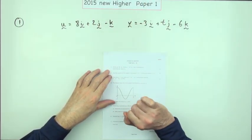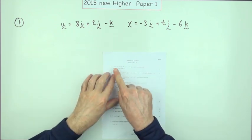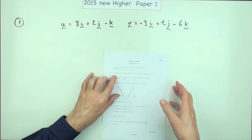Question one from the 2015 New Higher Paper 1. A starter for two marks. Here we go. These two vectors are perpendicular. Determine the value of this component t.